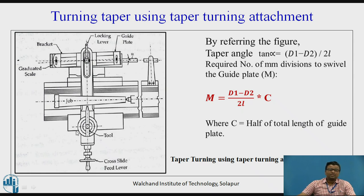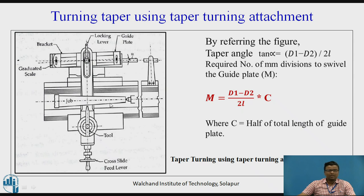The block is attached directly to the compound rest, which is separated from the saddle. Whenever you slide the cross slide lever, the block slides along the angled slot. By providing angle alpha to the guiding plate, the tool also moves at angle alpha, giving you the taper turning operation directly via the taper turning attachment.